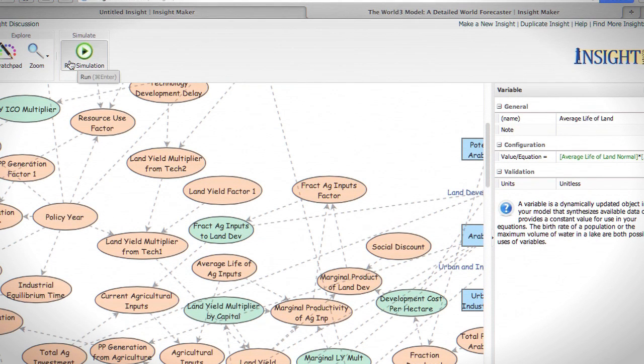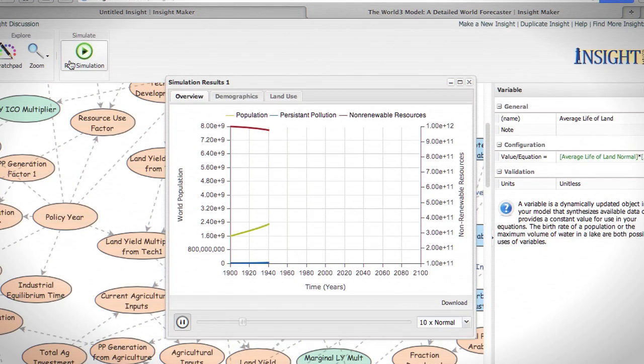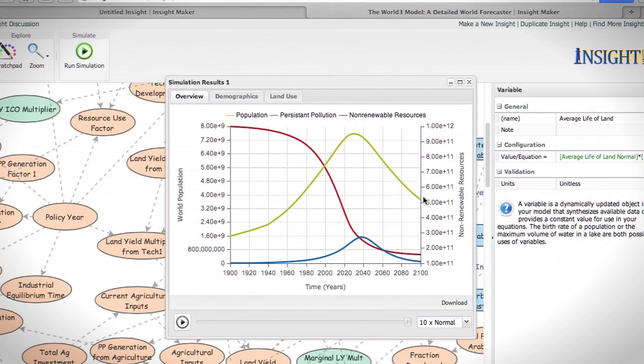So right now I'm going to run this model, and it's going to simulate population growth from 1900 all the way up to 2100. So it's both simulating the past, which we can then compare to what actually happened to see how accurate it was, but then it also predicts into the future. You can see this model predicts right now a peak population of about 7.5 billion people in the year 2030.